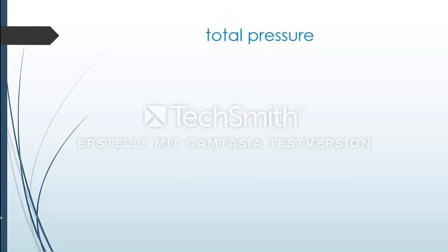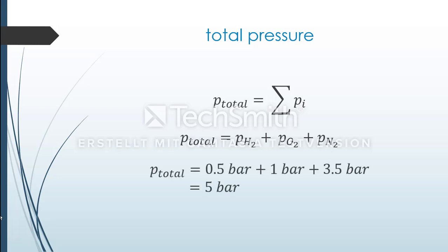Now we can calculate the total pressure of the mixture. We already know that the total pressure of a mixture is equal to the sum of all individual partial pressures. That means our total pressure is equal to the sum of the partial pressures of hydrogen, oxygen, and nitrogen, which we have calculated before. If we add up the results, we receive the total pressure of 5 bar.